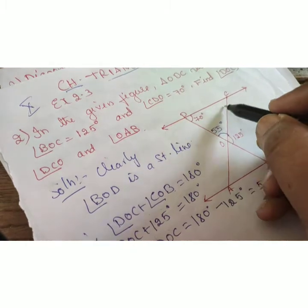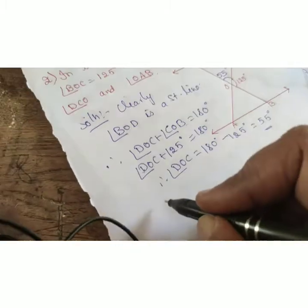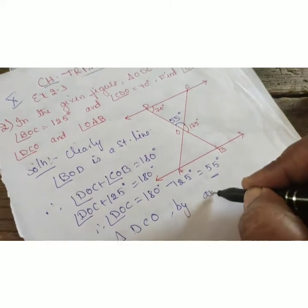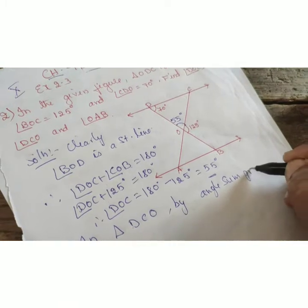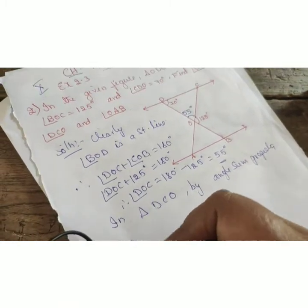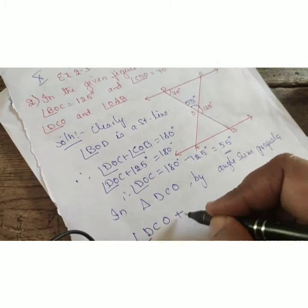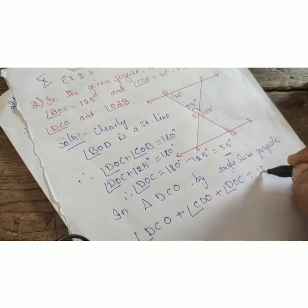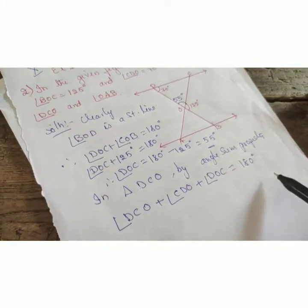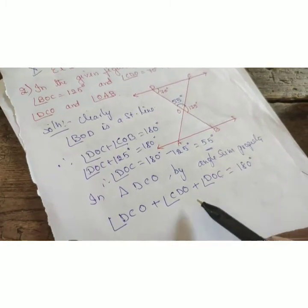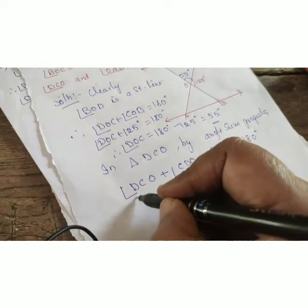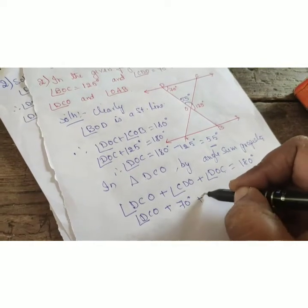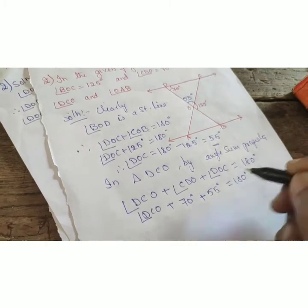Now to find angle DCO, we apply the angle sum property to triangle DCO. In triangle DCO, by angle sum property: angle DCO plus angle CDO plus angle DOC equals 180 degrees. We already found DOC; CDO is given as 70 degrees. Therefore angle DCO plus 70 degrees plus 55 degrees equals 180 degrees.